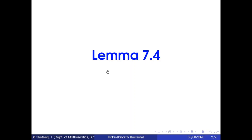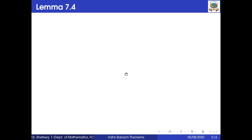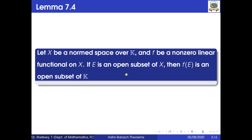Next we will discuss Lemma 7.4. Let x be a normed space over k and f be a non-zero linear functional on x. If e is an open subset of x, then f of e is an open subset of k.